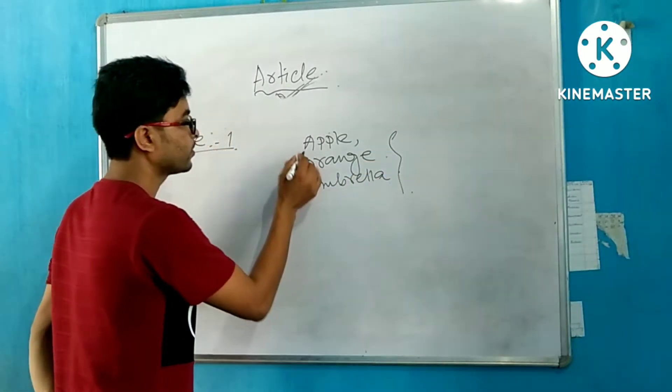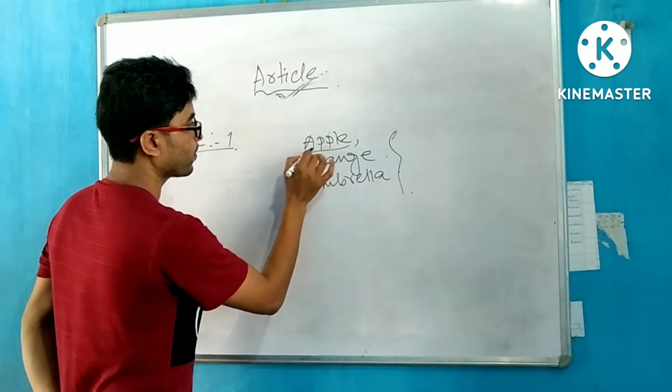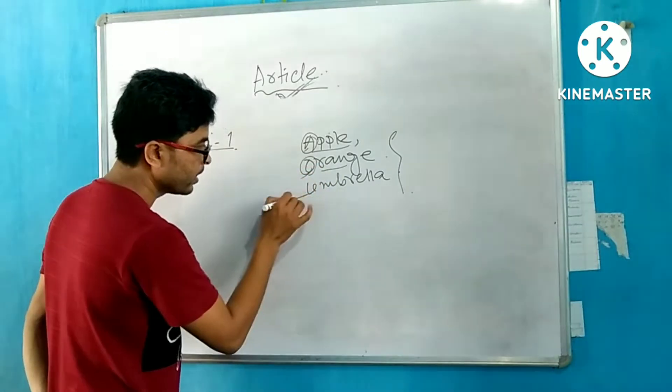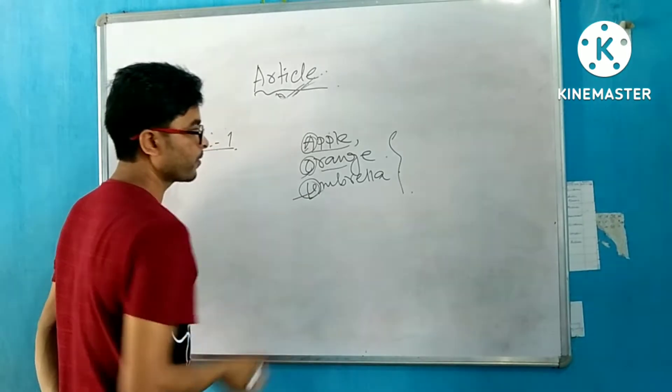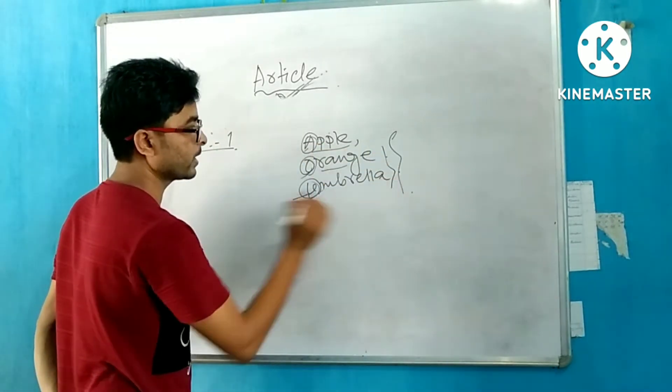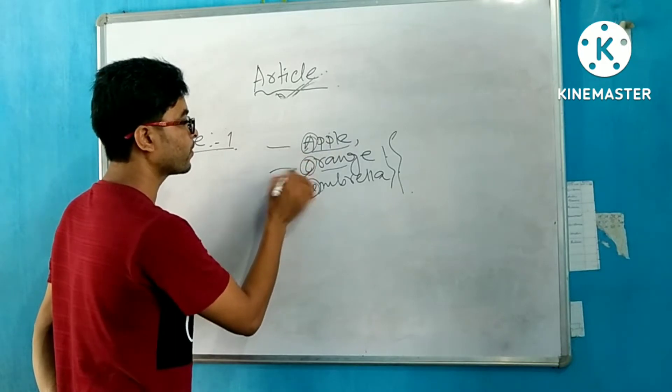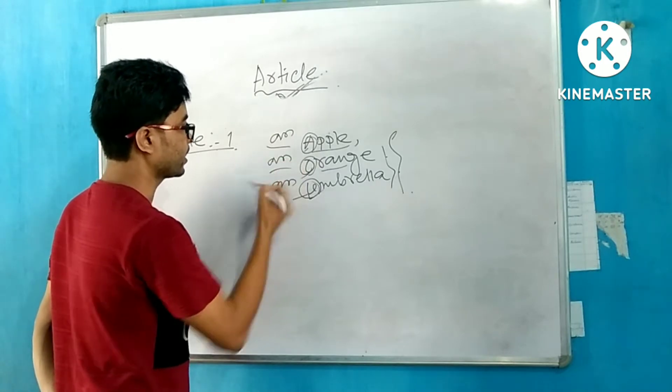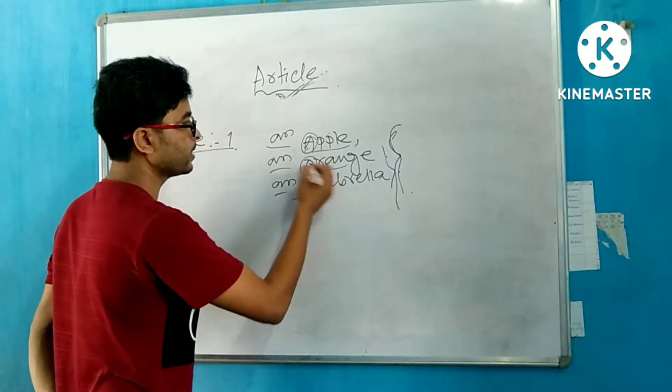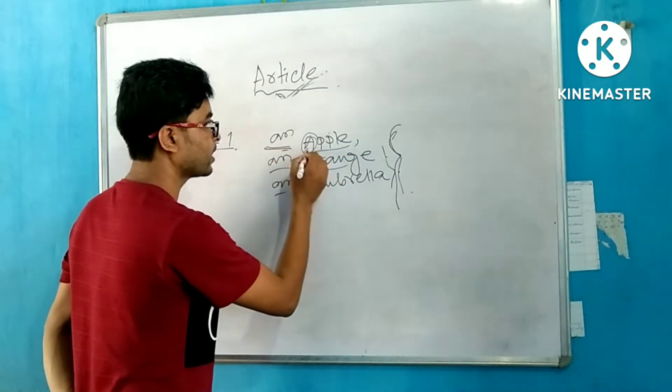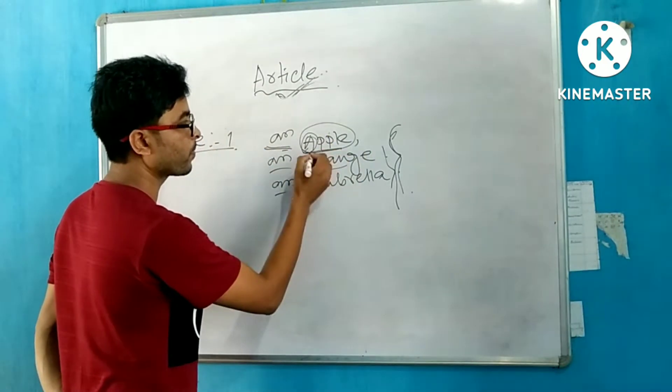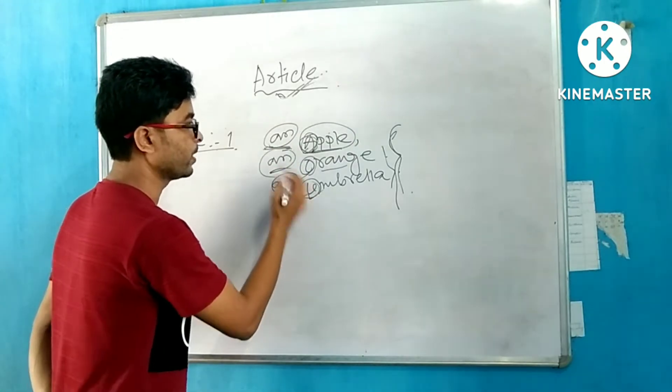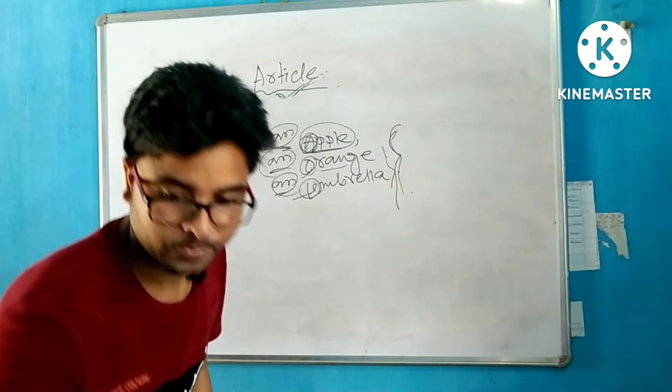Apple's first letter is A, which is a vowel sound. Orange starts with O. Umbrella starts with U. These are vowel sounds, so we use An article before them: an apple, an orange, an umbrella.